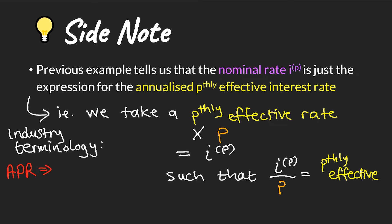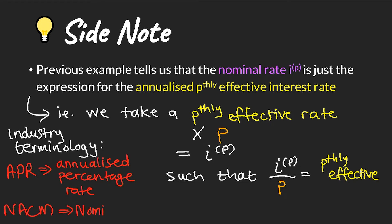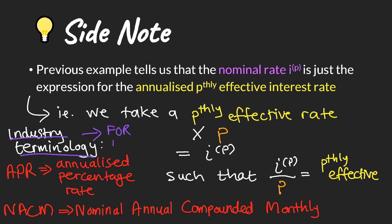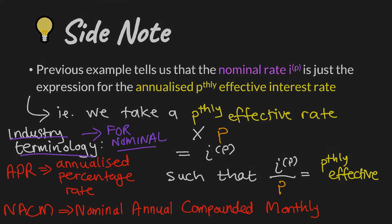There are various terms used in the industry for nominal rates. APR is one of them, and NACM is another. NACM stands for nominal rate per annum compounded monthly — it's basically giving you i^(12). So when you see these things on brochures or marketing materials, you know that they are quoting a nominal rate.